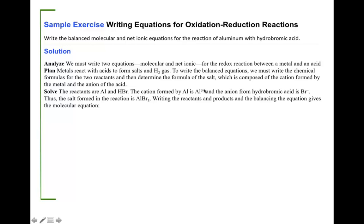The reactants are aluminum and HBr. The cation formed by aluminum will be aluminum plus three, and the anion from hydrobromic acid will be bromine. That salt will be aluminum bromide. Because this is plus three, we need three of the bromine, so we have a three as a subscript for the bromine.